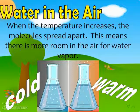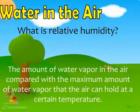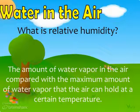Another aspect meteorologists use in forecasting the weather is relative humidity. Relative humidity, like its name says, is relative to the temperature — it is how much water vapor is in the air compared to how much the air can hold at a certain temperature.